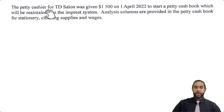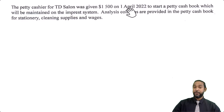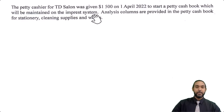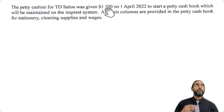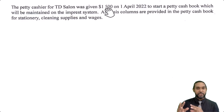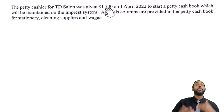The question reads: the petty cashier for TD Salon was given $1,500 on the 1st of April 2022 to start a petty cash book, which will be maintained on the Imprest system. Petty cash is used to spend on small recurrent items of expenditure, so we don't clog up the major cash book with frequently recurring items.